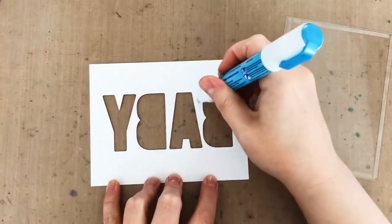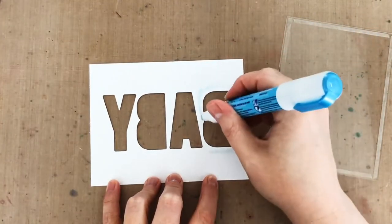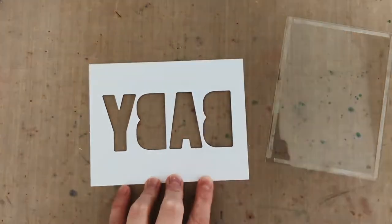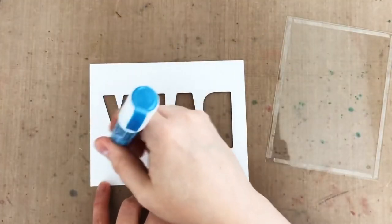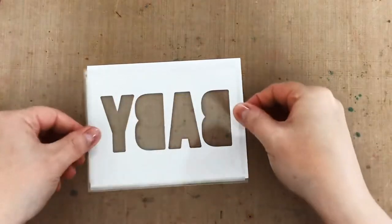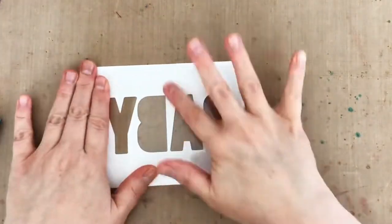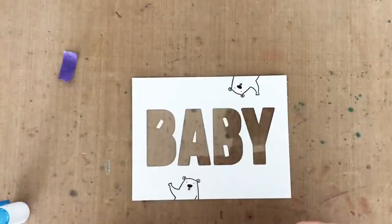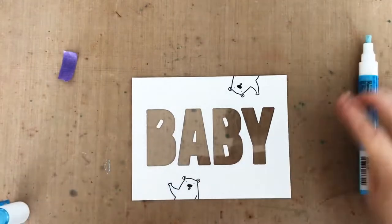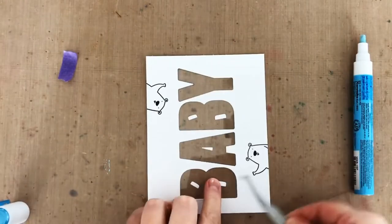Now to turn my die cut panel into a shaker window, I just need to add acetate to the back. So I've got double sided tape all around the edges of the acetate, but I'm also adding a little liquid glue around the letter openings just to make sure everything is nice and stuck down. Then I'm using my glue pen again to put those letter middles on the front of my shaker window.